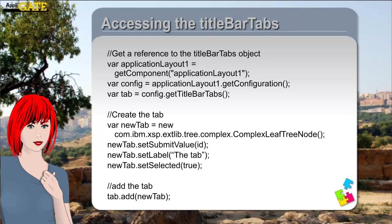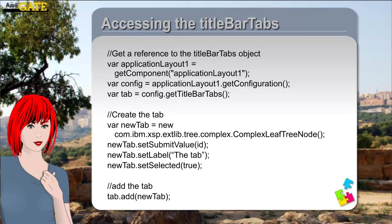Here you see the code we use to programmatically add a tab. It is used in the list of employees to show the detail of an employee. The first step is to create a reference to the Title Bar Tabs object. The application layout has a property 'configuration' — you need to retrieve it, then from the configuration object you can create a reference to the Title Bar Tabs object. Next a new tab object has to be created using the Complex Leaf Tree Node class, because this class has a property 'submit value' needed in the on-item click event. When all necessary properties are set, you can add it to the Title Bar Tabs object. Keep in mind that before you set the selected attribute to true, you first deselect all other tabs.